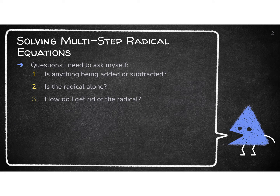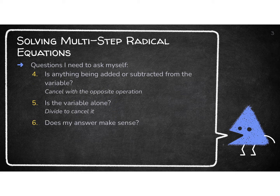So, questions that you need to ask yourself — these are the ones from the last unit. Anything being added or subtracted: what you want to do is get the radical alone. Once the radical is alone, you need to square it to get rid of it. Remember, the square root and the square cancel each other out. These are the new questions: you're going to have an equation left that you have to solve. You get your answer and then you always have to plug it back in and check to see if it works or if it's no solution.